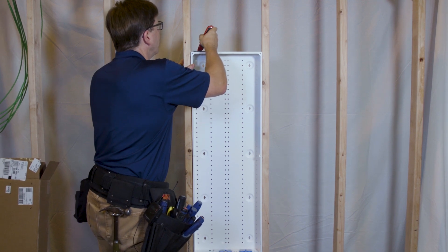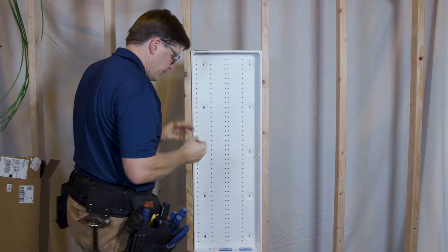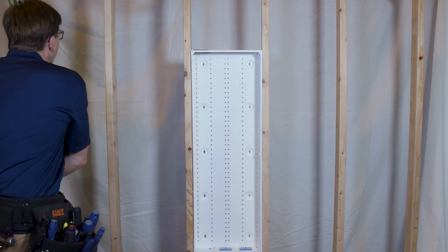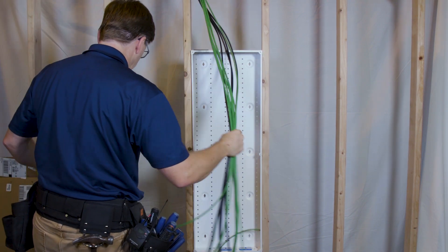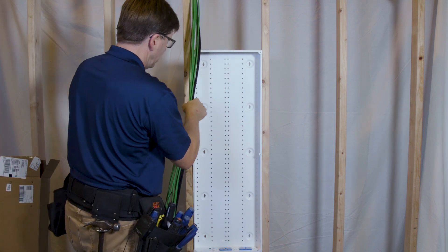We've installed this grommet already. I'm going to cut a little X in the top of it. Our cables are staged up here. We've got eight Cat6 and four coax cables.